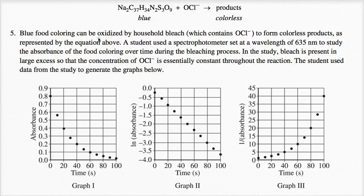Blue food coloring can be oxidized by household bleach, which contains hypochlorite. Household bleach is usually considered to be sodium hypochlorite, which reacts with the food coloring to form colorless products, as represented by the equation above.